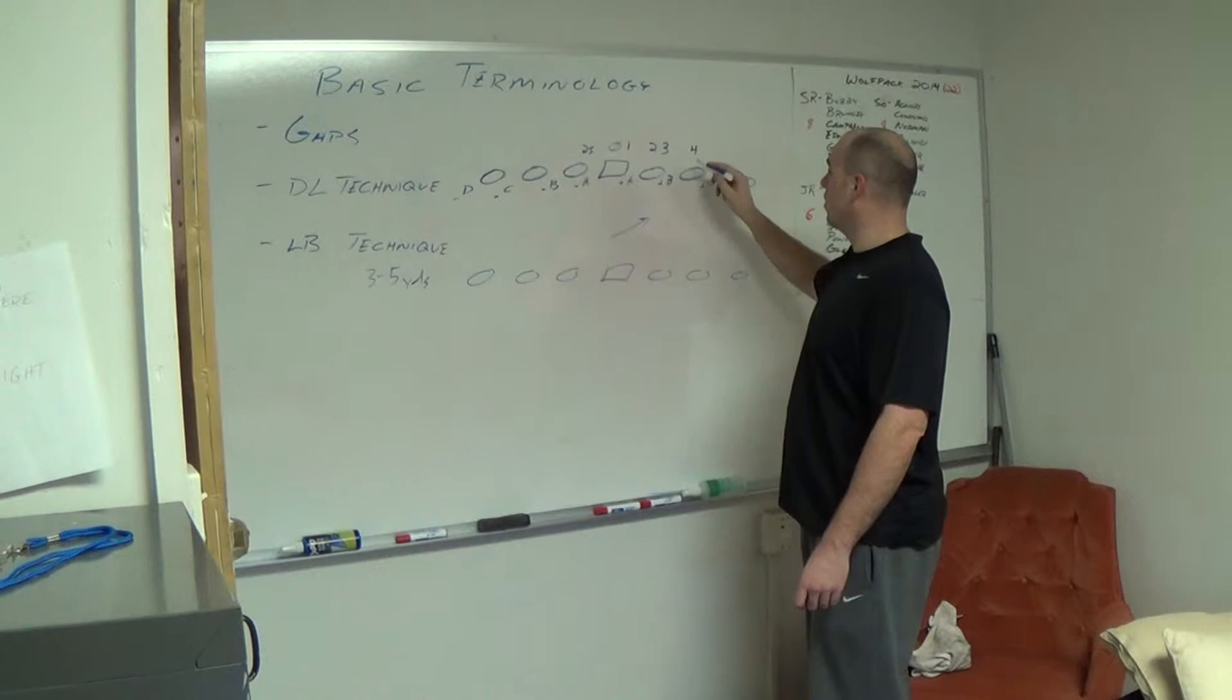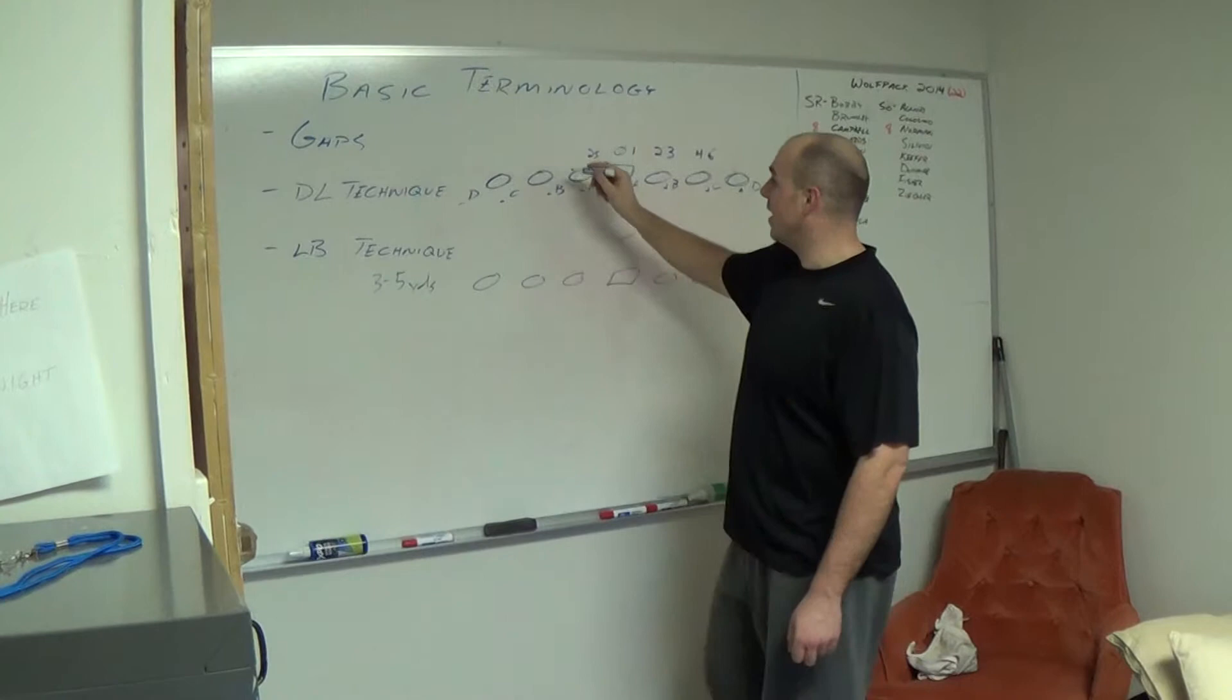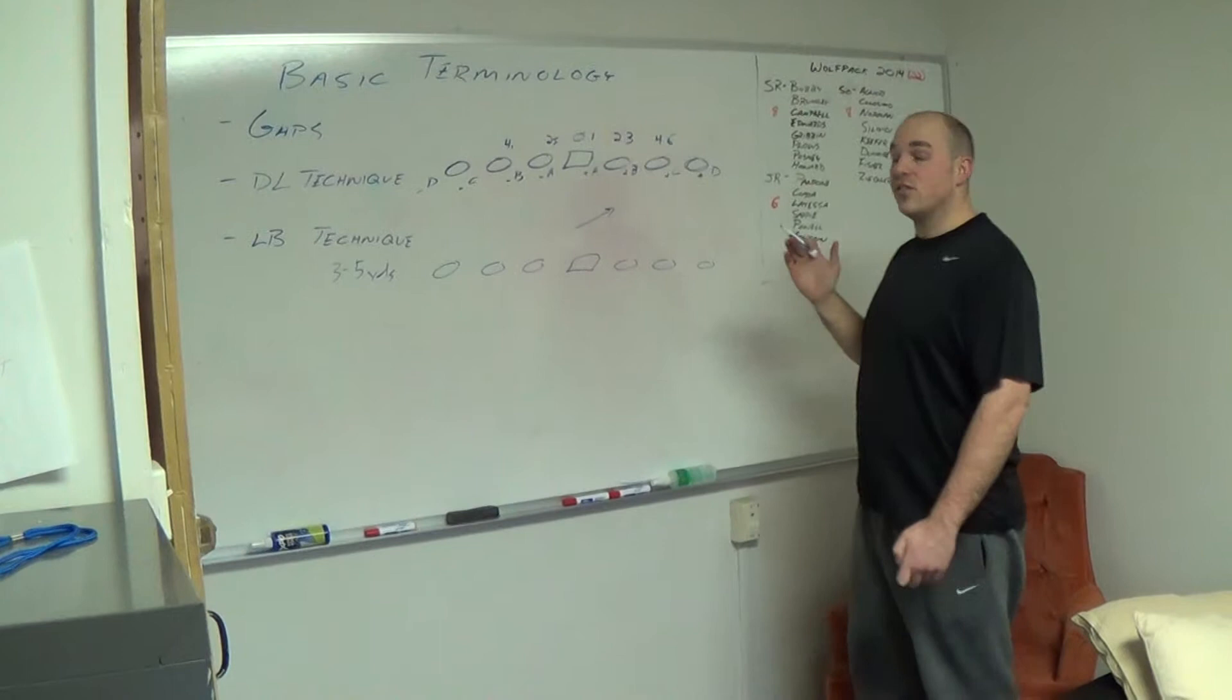Head up on a tackle is a four. Outside shade on a tackle is a five. Inside shade on a tackle is a four eye. Makes sense so far. Now this is where it gets tricky.